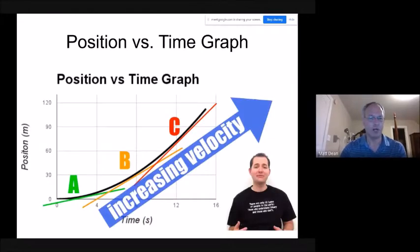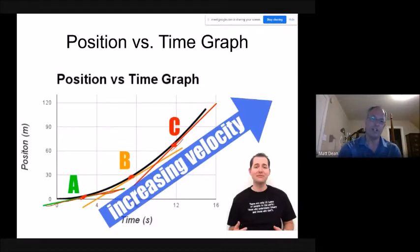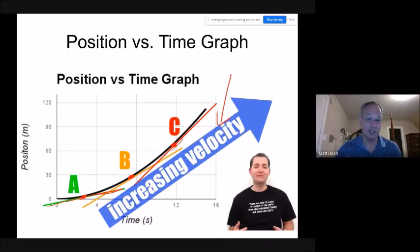Here we see more curves — for the black line, tangent lines are drawn at several points. Because it's concave up, those tangent lines get steeper and steeper as we move from point A to B to C, telling us that velocity is increasing because there is a positive acceleration.